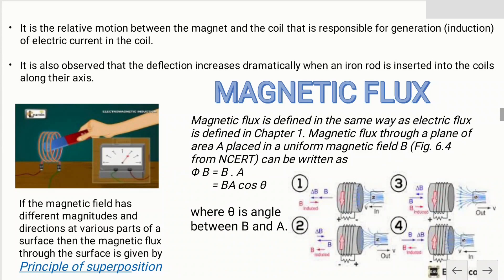The total magnetic flux can be calculated by the principle of superposition, which involves doing the algebraic sum of all the magnetic fields along with their directions, since magnetic field has its own direction.